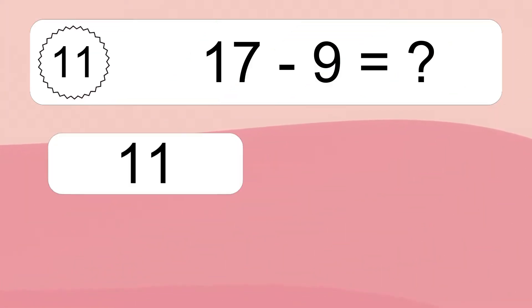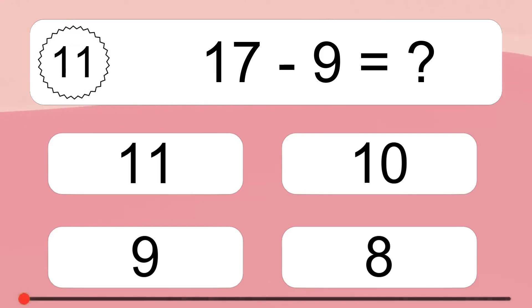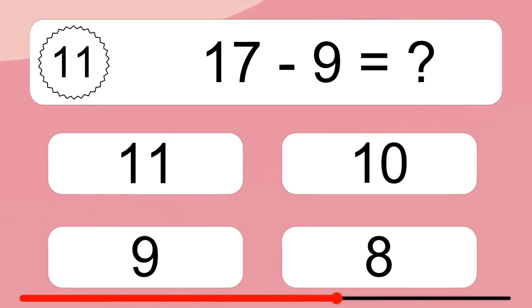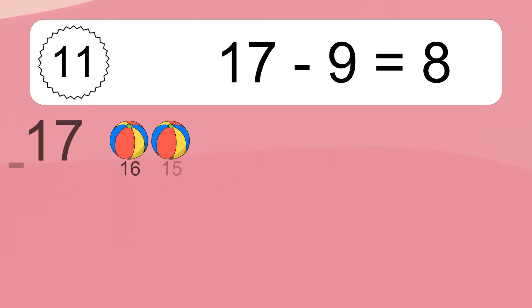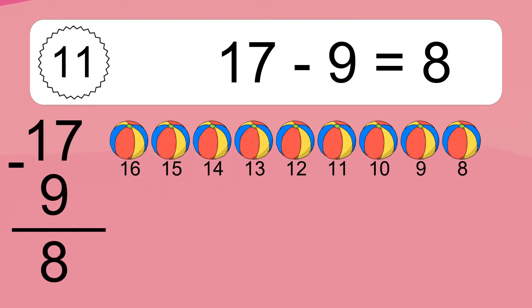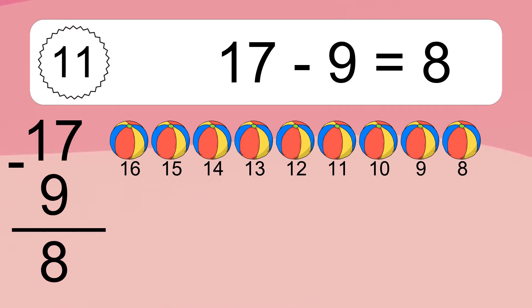17 minus 9 equals what? 17 minus 9 equals 8. Let's count it: 16, 15, 14, 13, 12, 11.